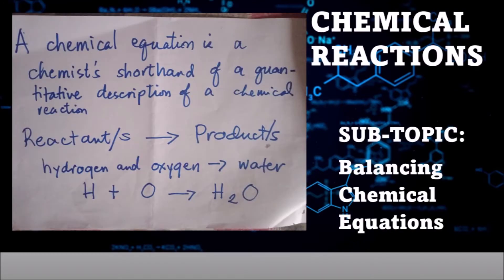Students, a chemical equation is a chemist's shorthand of a quantitative description of a chemical reaction. With knowledge of formulas of compounds, you are now ready to write chemical equations. Basic terms and symbols are necessary in writing equations.